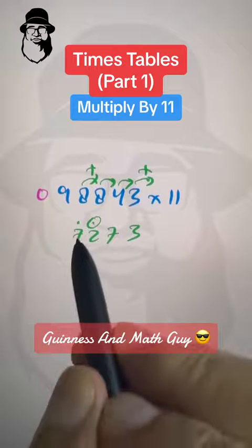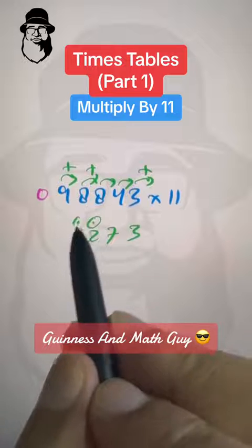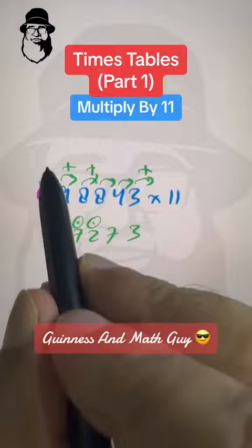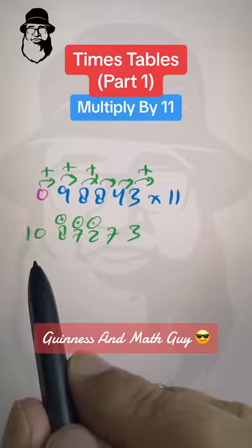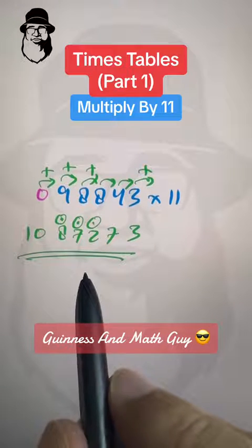And then 9 plus 8 is 17 plus this dot will make it 18. So we'll put dot 8. And 0 plus 9 is 9 plus this dot will make it 10. And we'll put 10 as it is. So that's our answer. 1, 0, 8, 7, 2, 7, 3.